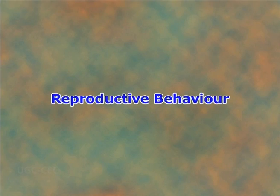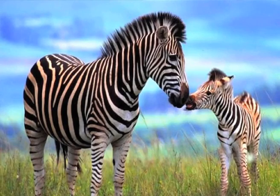Reproductive behavior means an activity directed towards perpetuation of a species. The enormous range of animal reproductive modes is matched by the variety of reproductive behavior. Reproductive behavior in animals includes all the events and actions that are directly involved in the process by which an organism generates at least one replacement of itself.